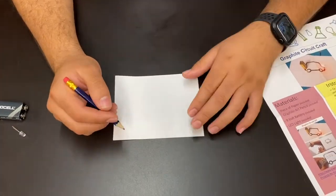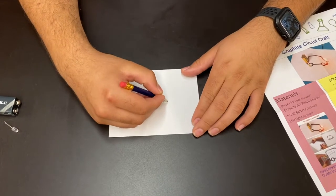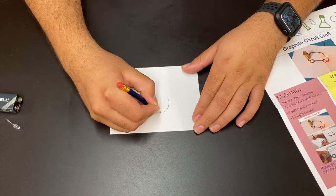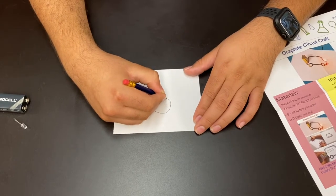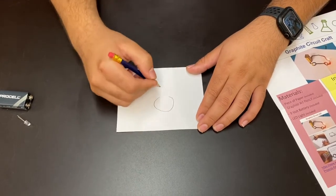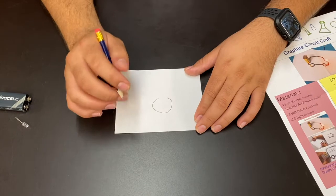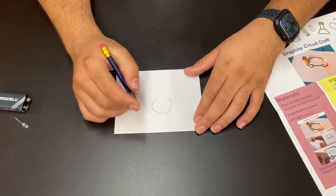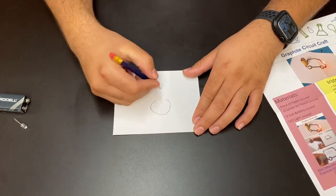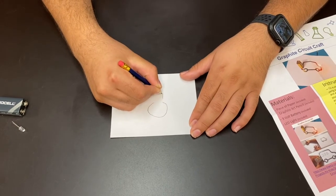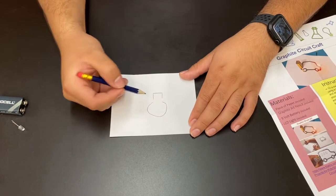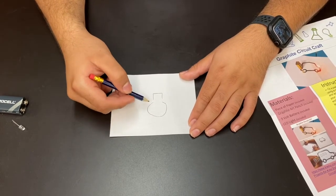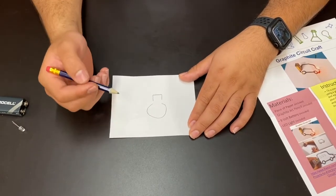Now to get started, you want to go ahead and pick an image that you're going to draw. Since we're talking about electricity, I'm going to go ahead and draw a light bulb. Now it doesn't matter if you're not the best artist—we're going to fix this a little bit later. The important thing you want to do is make sure there's going to be a couple of different breaks inside of your image, so you don't want it to be fully complete. I'm going to put my breaks down here. You can see there's a couple of areas where my image doesn't connect—these are going to be the contact points for the actual battery and the LED.